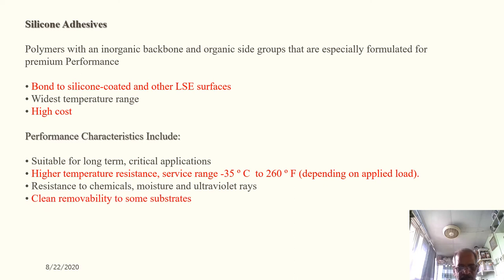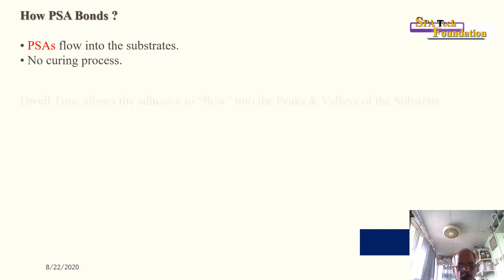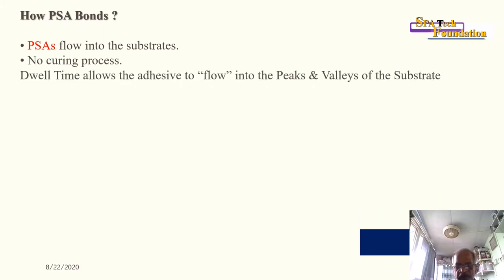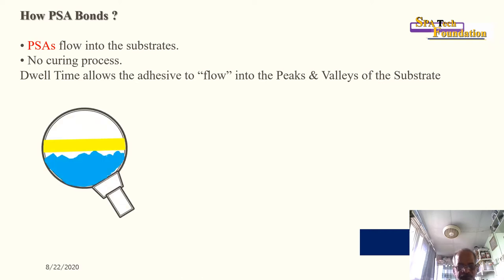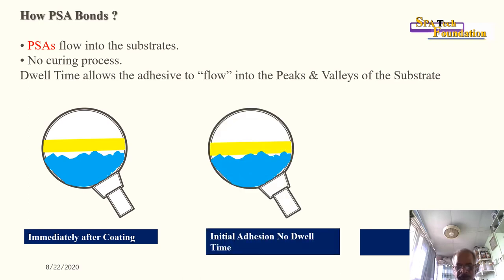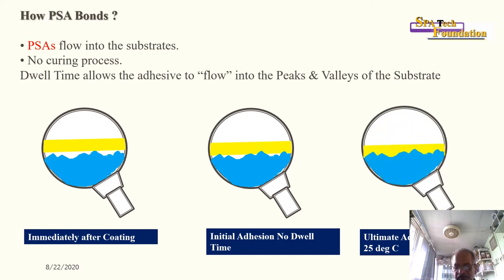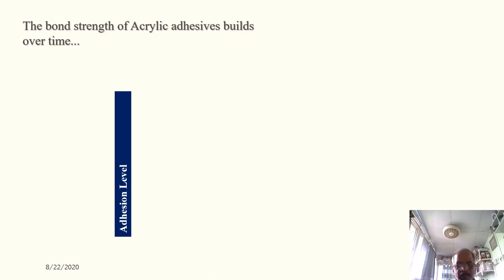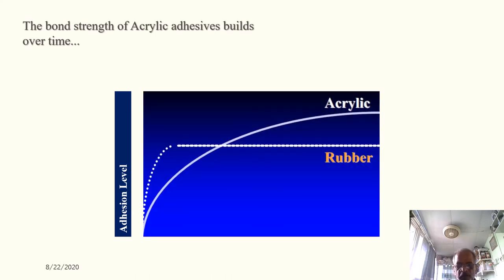Silicone adhesives offer temperature resistance ranging from minus 35°C to 260°C, resistance to chemicals, moisture, and UV rays, and clean removability on some substrates. How PSA bonds: the adhesive flows into the substrate with no curing process. Dwell time allows the adhesive to flow into the peaks and valleys of the substrate. After 24 hours at 25°C, high ultimate anchorage is achieved. The bond strength of acrylic adhesive builds over time and is significantly higher than rubber adhesive.